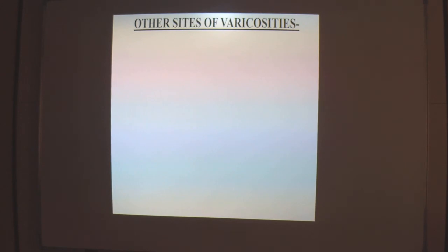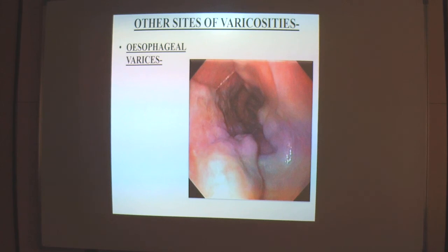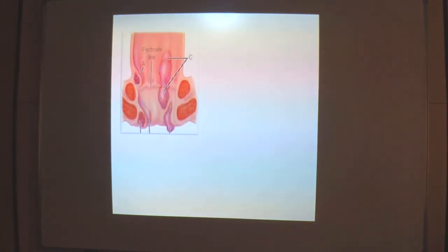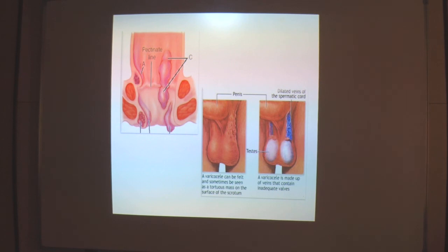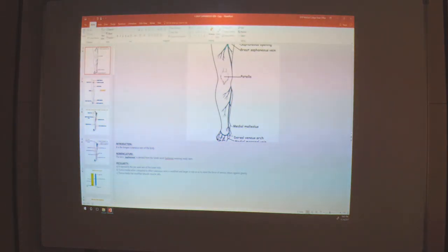Other sites of varicosities in the body include: esophageal varices, very commonly seen as a complication of portal hypertension, occurring at the lower end of the esophagus — a site of portosystemic anastomosis — where the dilated veins may rupture during passage of food causing hematemesis, considered a fatal condition. Second, piles or internal hemorrhoids, which are varicosities of the tributaries of the superior rectal vein covered by mucous membrane, commonly seen in chronic constipation, pregnancy, and liver cirrhosis. Third, varicocele in males, which is elongation and dilation of the veins of the pampiniform plexus, commonly seen on the left side in adolescent males.